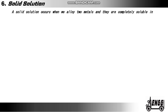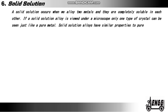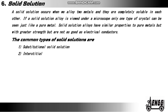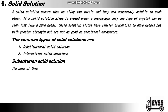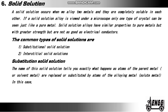Solid solutions. A solid solution occurs when you alloy two metals and they are completely soluble in each other. If a solid solution alloy is viewed under a microscope, only one type of crystal can be seen, just like a pure metal. Solid solution alloys have similar properties to pure metals but with greater strength, though they are not as good as electrical conductors. The common types of solid solutions are substitutional solid solutions and interstitial solid solutions. In a substitutional solid solution, atoms of the parent or solvent metal are replaced or substituted by atoms of the alloying or solute metal.